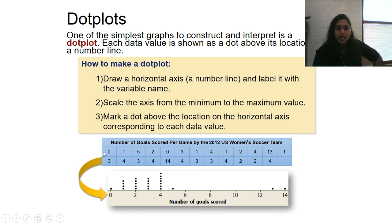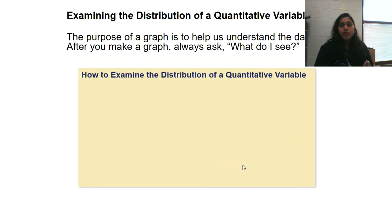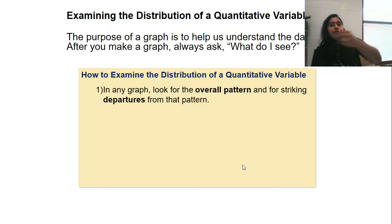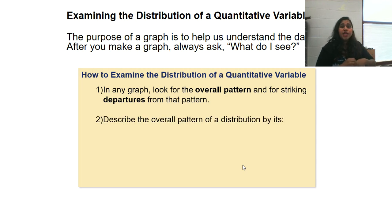And then you mark the dot above the location corresponding to each value set. So the number of goals. So here you can see this is the 2012 U.S. women's soccer team. So they made 2 goals, 1 goal, 5 goals, 2 goals, 0 goal. So let's look at the 2. 1, 2, 3, 4, 5. There's 5 dots for 2. Let's check. 1, 2, 3, 4, 5. 5 dots for 2. So, again, they correspond. It's the frequency. So the number of times we hit 2 goals in that game, the 2012 U.S. soccer team, was 5 times. And so you can actually read that in that dot plot.